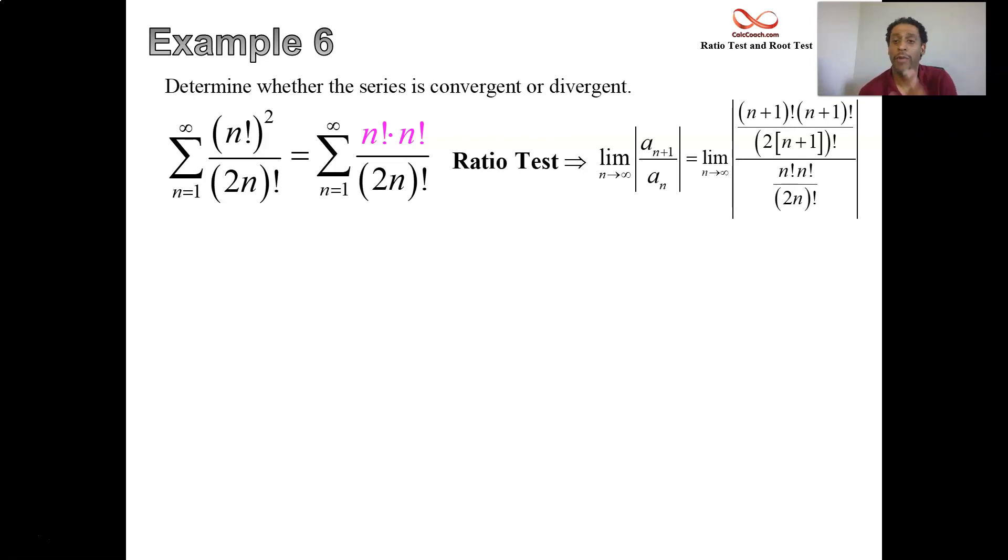Instead of writing that, I want you to consider the following. When you see a series that you want to do the ratio test on, take note of how many terms there are. In our altered version we have three different terms, so we then go write out three different fractions.